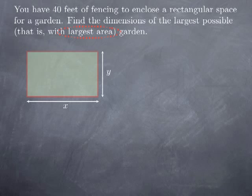We want to find x and y that correspond to the largest area. Because I'm trying to maximize the area, I'm going to introduce a notation for the area — let's call the area capital A. The area is just a product of the dimensions. I also know that I have only 40 feet of fencing, meaning I need to go around the rectangle twice in each direction: 2x plus 2y has to be 40.